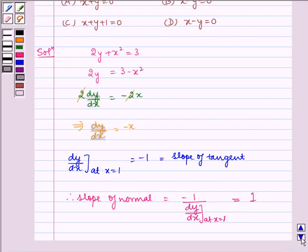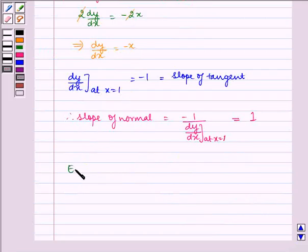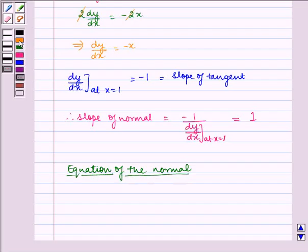Now let us form the equation of the normal. The general form of the equation of normal is y minus y1 equals m multiplied by x minus x1.